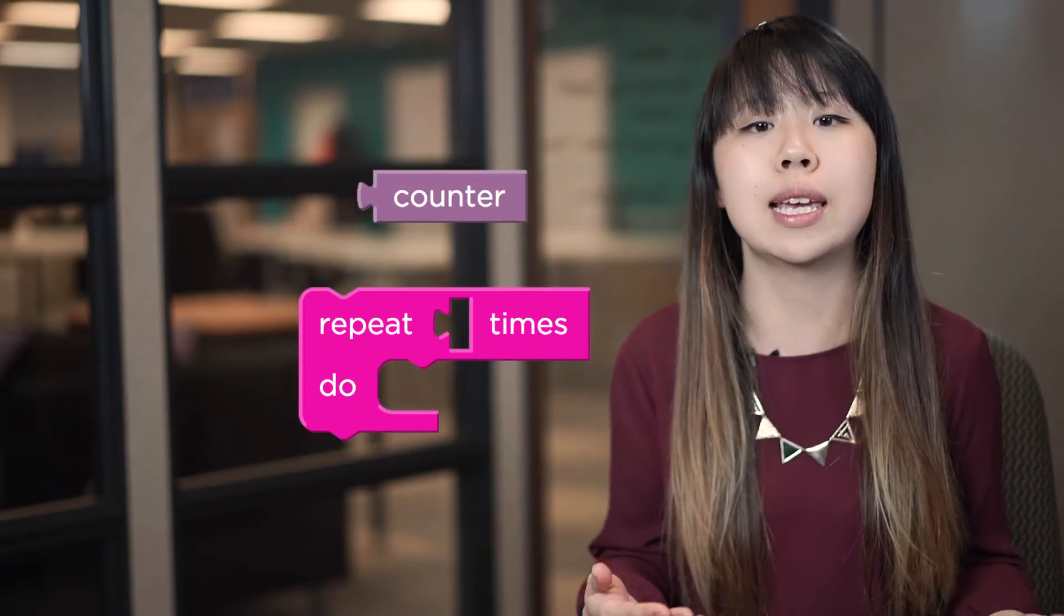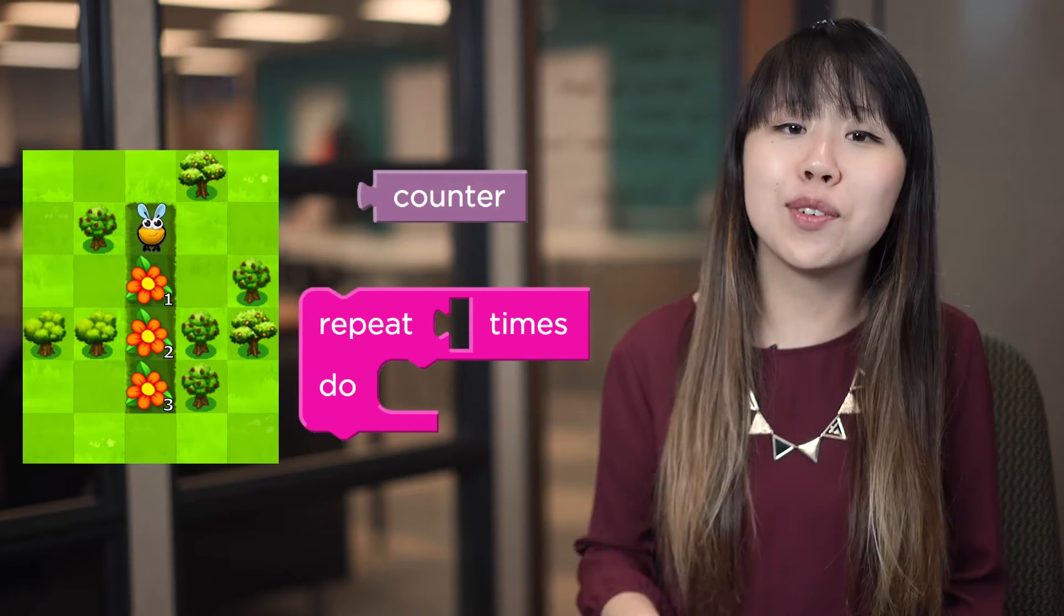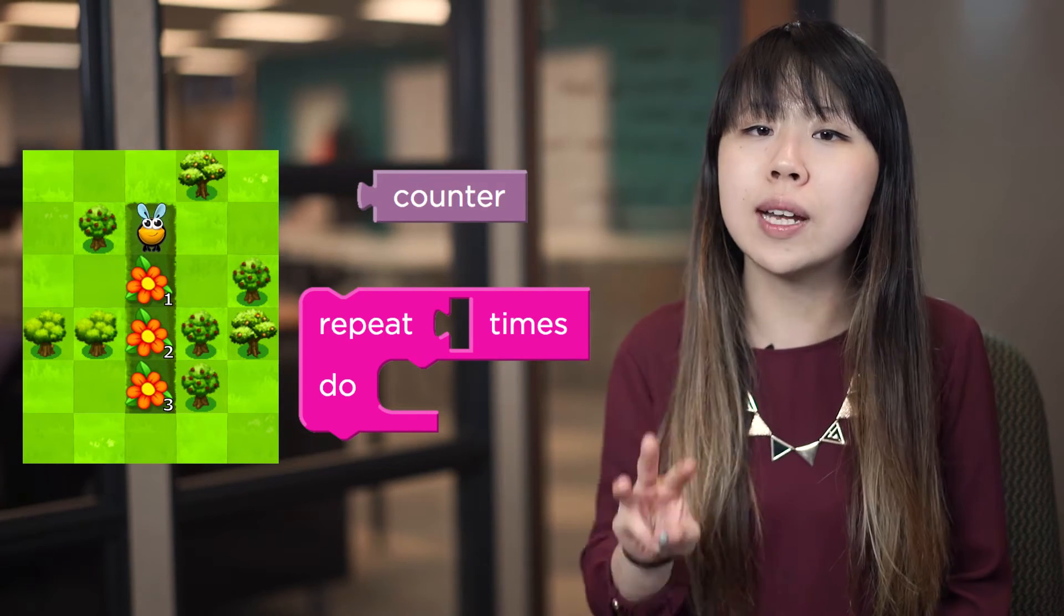So the benefit of using a real for loop instead of the repeat block is that you can actually see the counter variable and use it in your loop. So for example, if I have a series of flowers and the first one has one nectar, the second one has two nectars, and the third one has three,